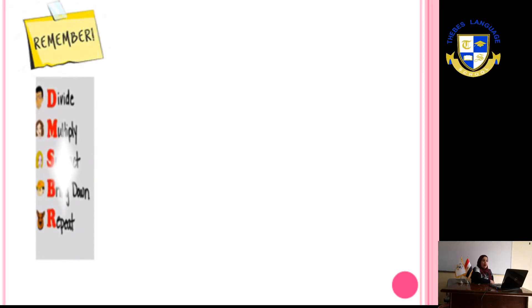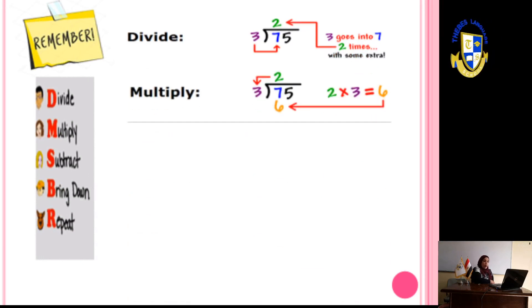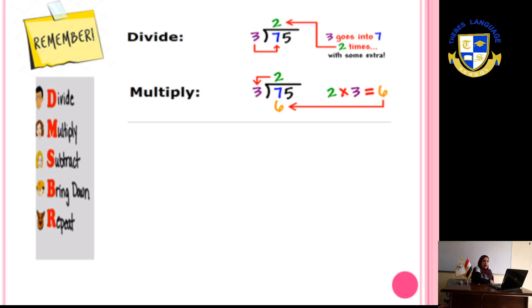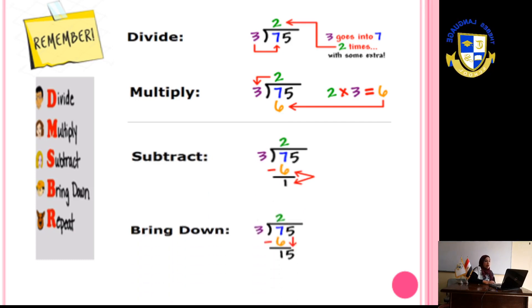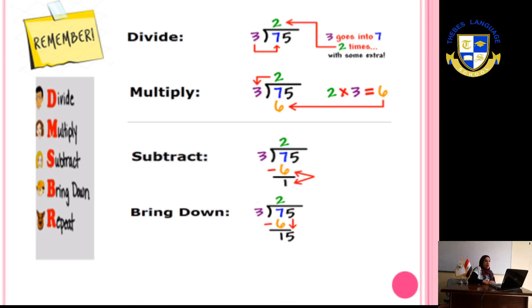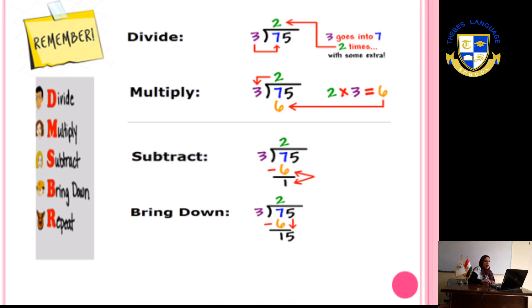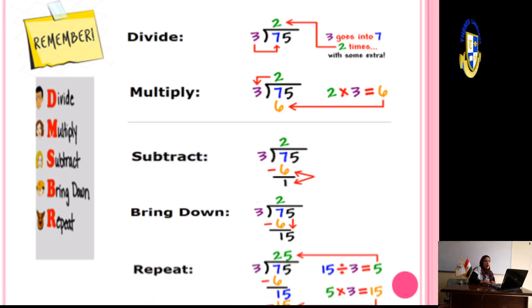For example, when I say 75 divided by 3. Step 1: 7 divided by 3. In timetable 3, I can find 7. What is the nearest number to 7 in timetable 3? It will be 6. Where can I find 6? In 2. So, 7 divided by 3 — the answer will be 2, and 2 times 3 equals 6. 7 minus 6 will be 1. Then drop 5. 15 divided by 3 — the answer will be 5. So the answer will be 25. That's what we studied before.